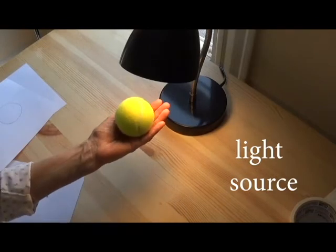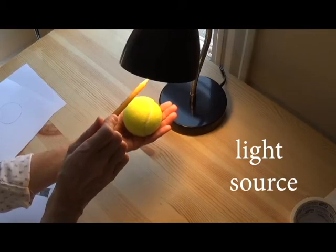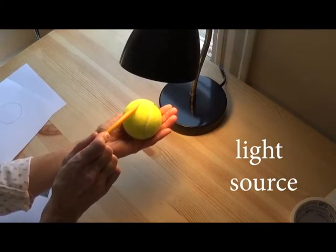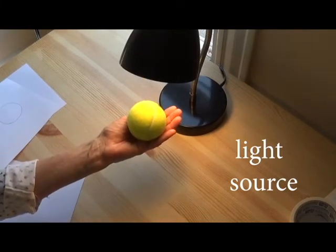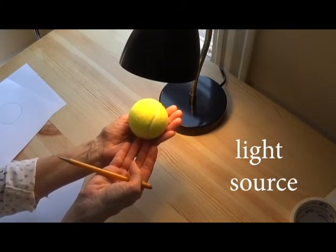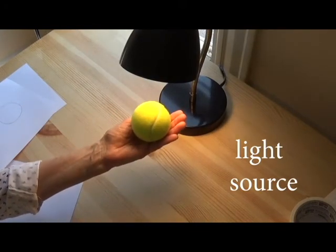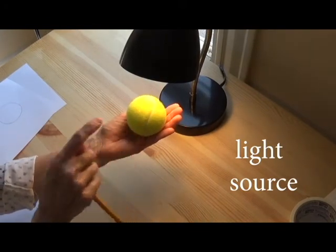Look at this ball. Here's my little lamp. And you see that the part of the ball that's closest to the light is lightest. And you see how the part underneath the ball that's farthest away from the light is darker, lighter, darker.